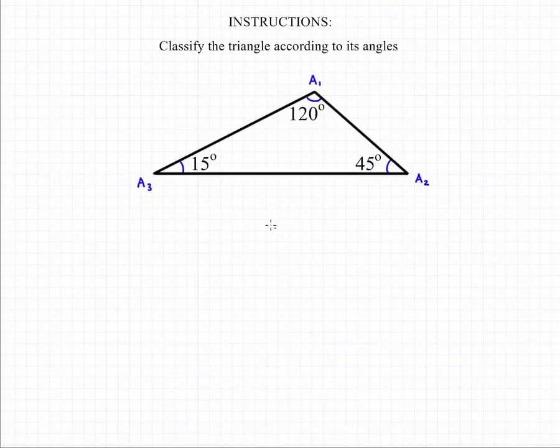So to begin here, angle one is between 90 degrees and 180 degrees in measure. It's 120 degrees, which makes it an obtuse angle.